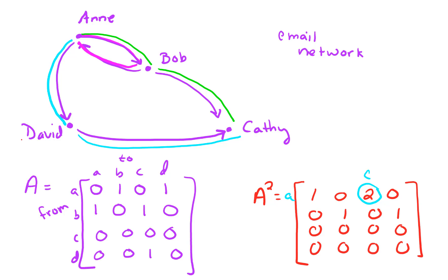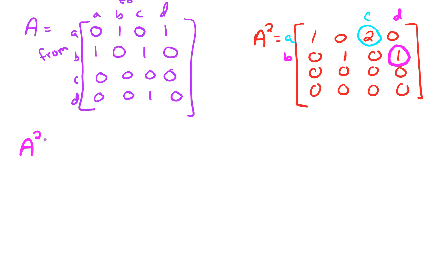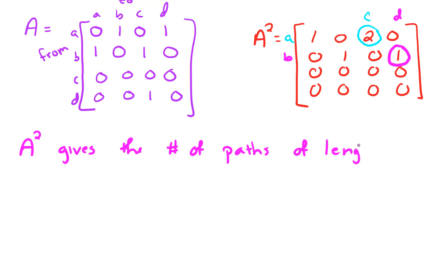We also have a path of length 2 going from Bob to David. We could go Bob to Ann, and then Ann to David — so there's a path of length 2 from Bob to David. So this A-squared matrix gives us the number of paths of length 2 between person I and person J, in the row-column position.